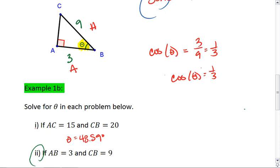Since we're solving for an angle measure, we're going to have to use the inverse function. We say theta equals cosine inverse of 1 third. We can plug this into our calculators. And you should get that theta is 70.53 degrees.